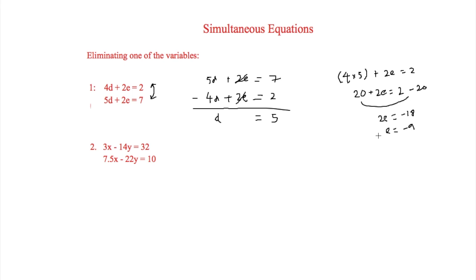The second example is slightly more difficult as there isn't an obvious thing to subtract. We have 3x in the first equation and 7.5x in the second. If you do a little calculation, 7.5x is 2.5 times 3x. So we multiply the entire first equation by 2.5, which gives 7.5x — the same as the bottom equation.